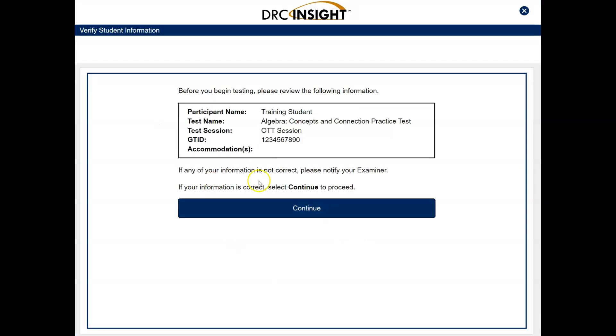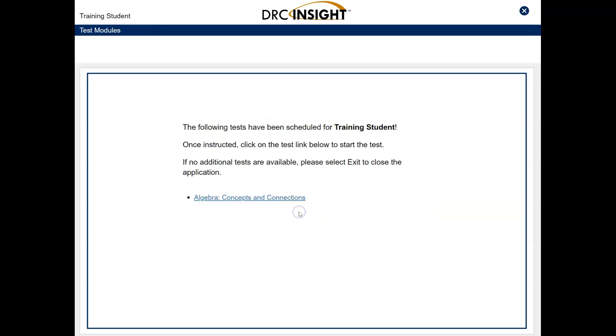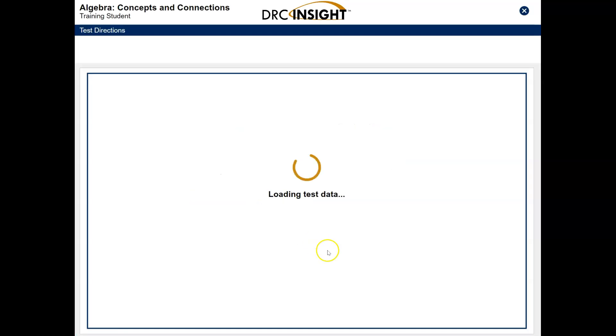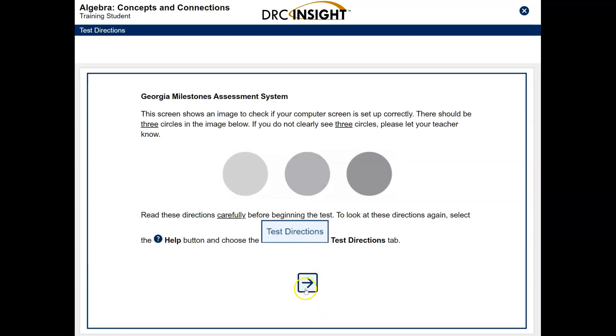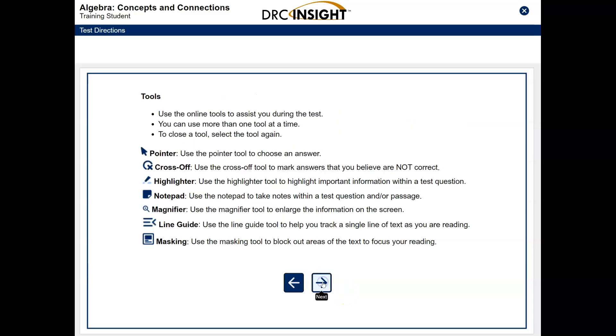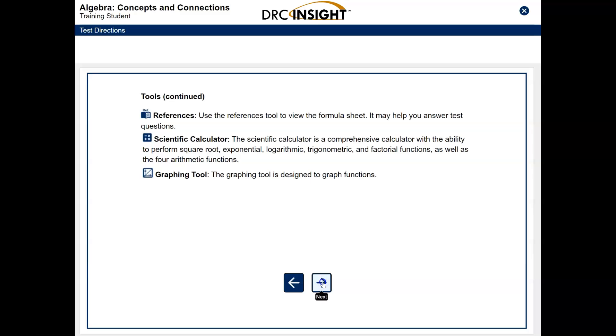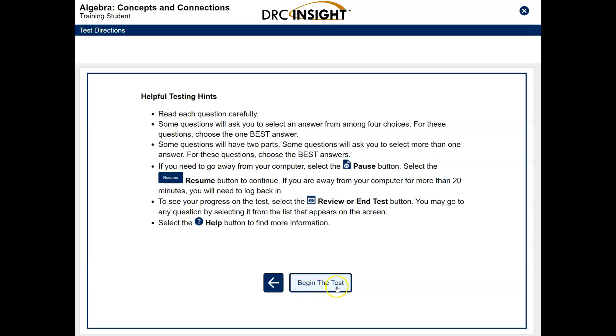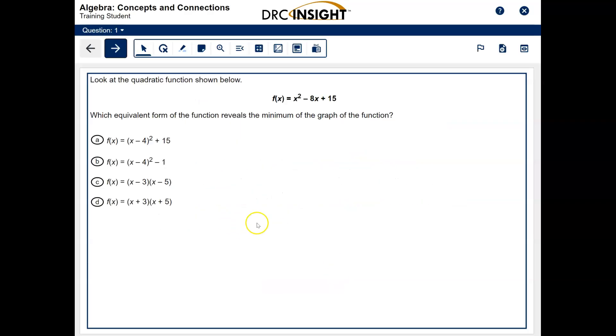When you get in here, it's going to give you some information, which is a training student information. You're going to click continue, and then this screen will have the name of your test. You're going to click on the name of the test to open it. Then you can read all of this if you want, but I'm going to skip through it quickly. It's giving you information about the tools that are within the testing platform. So begin the test. The first item we're going to look at is item number one.